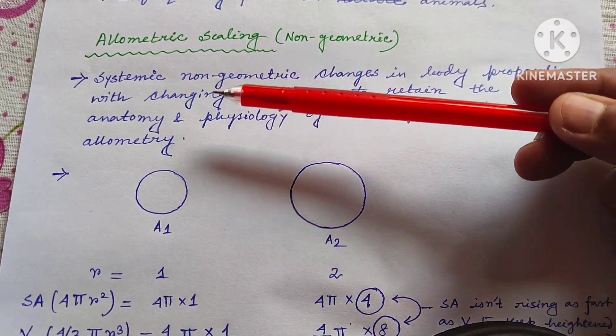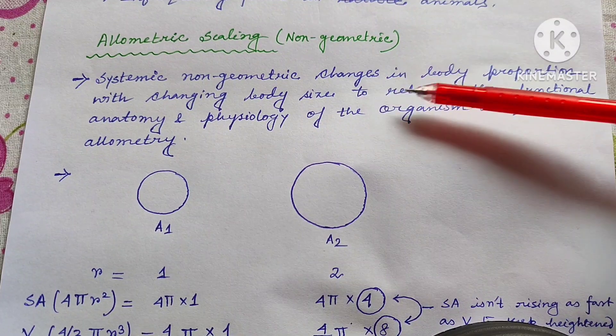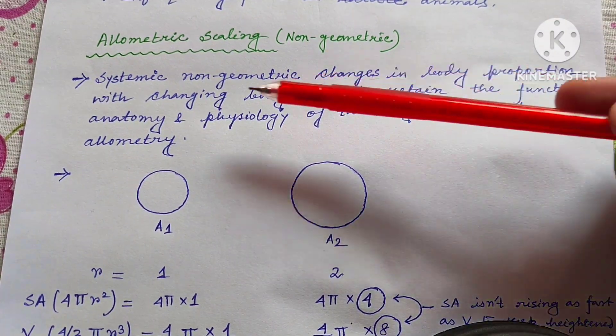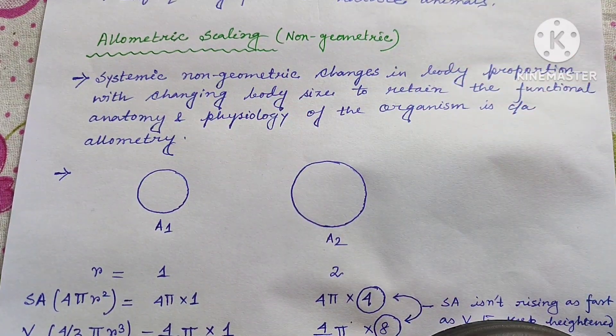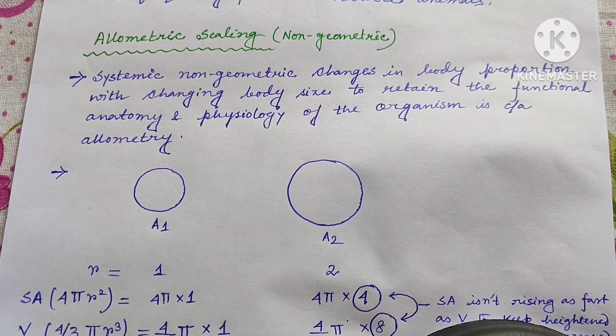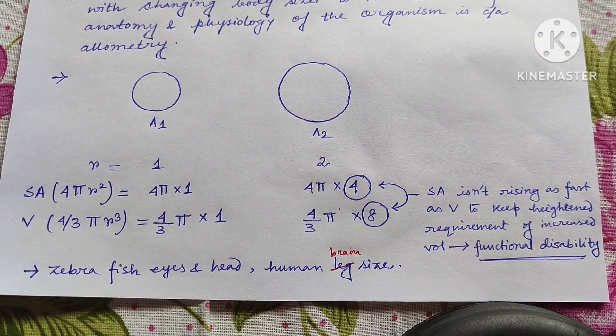So to maintain the functional ability or functional anatomy and physiology of any organism we need allometric scaling. So what is allometric scaling? It is a systematic non-geometric change in body proportion with changing body size, to retain the functional anatomy and physiology of any organism in its environment.